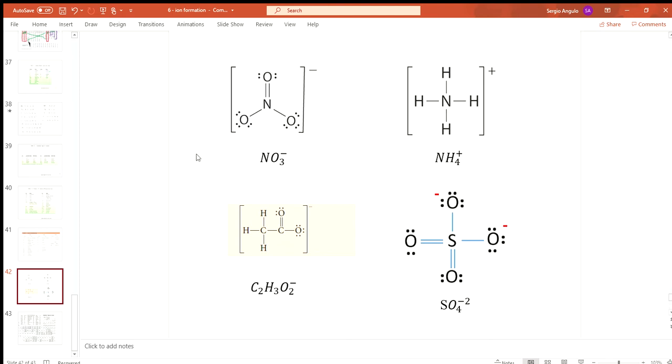Whenever you bring in a nitrate, it has a negative one charge, like if you brought in a chloride or a bromide. NH4+ is ammonium. It's a nitrogen with four hydrogens, and here we see how it's put together.